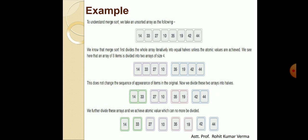Again we are dividing each half further. The first list contains two numbers: 14 and 33. The next list contains 27 and 10. The third list contains 35 and 19, and the last list contains 42 and 44. We continue dividing until we achieve atomic values which cannot be divided further — so finally we get: 14, 33, 27, 10, 35, 19, 42, and 44.